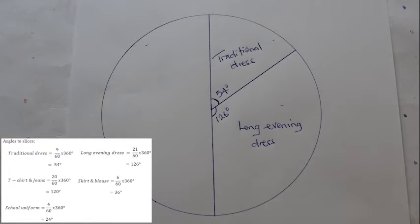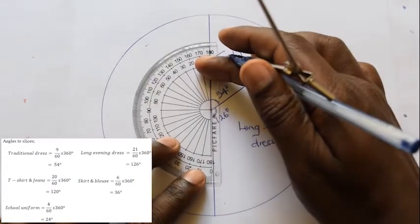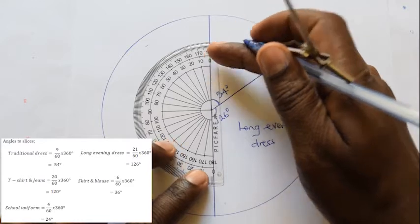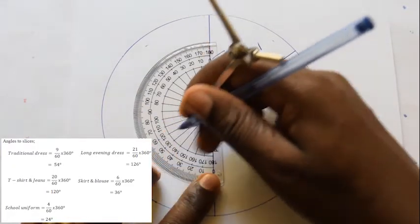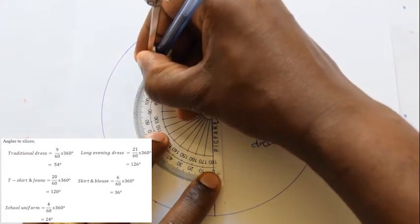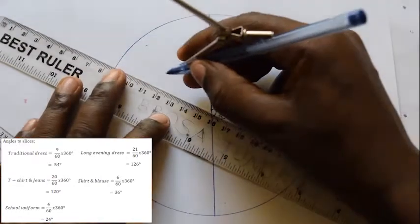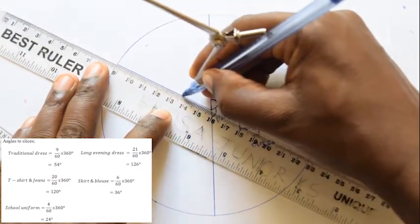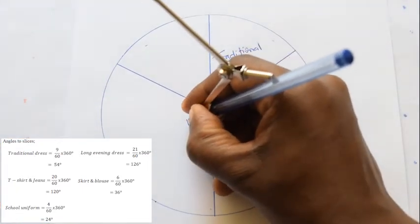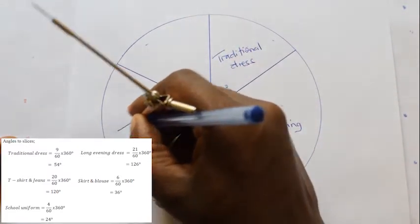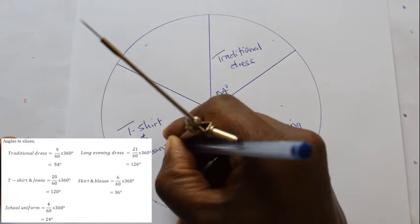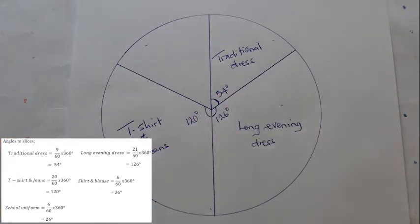T-shirt and jeans correspond to 120 degrees. Skirt and blouse correspond to 36 degrees.